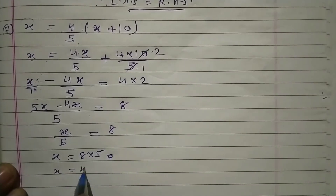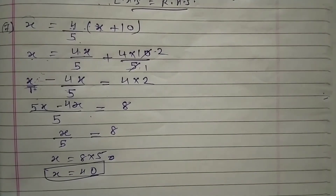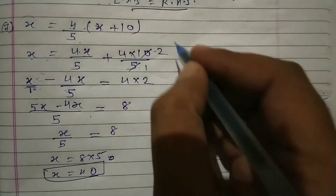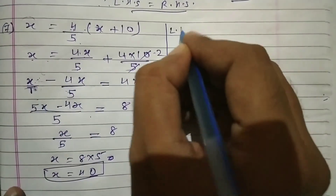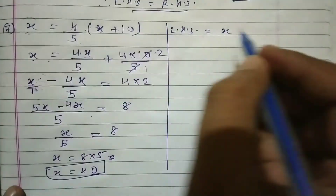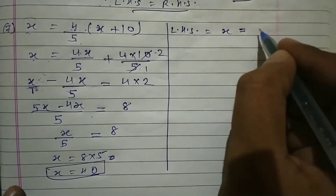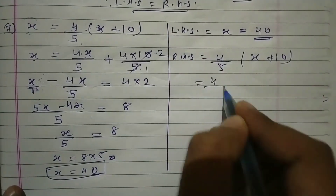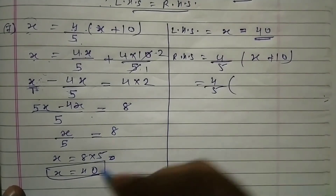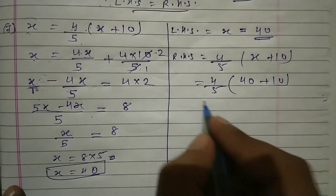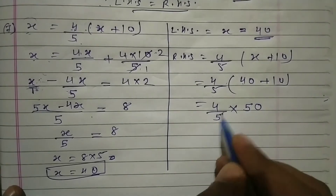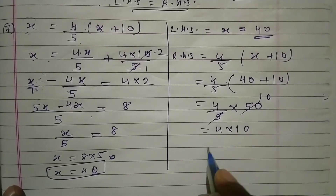x = 8 × 5 = 40। x की value आ गई: x = 40। Answer check करते हैं। LHS: x = 40। RHS: 4/5 × (x + 10) = 4/5 × (40 + 10) = 4/5 × 50 = 4 × 10 = 40। LHS = RHS = 40, answer सही है।